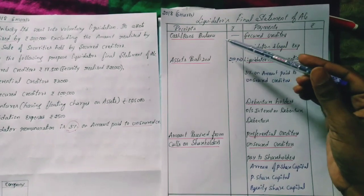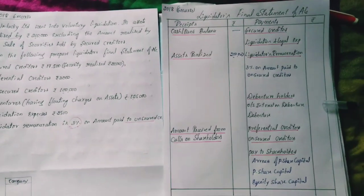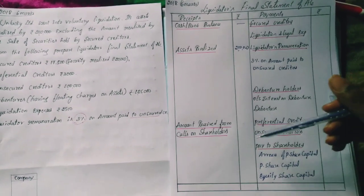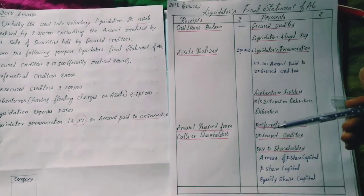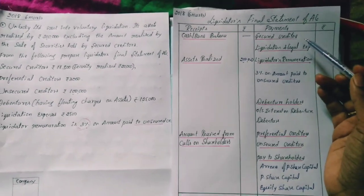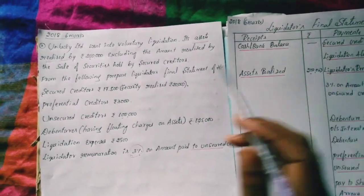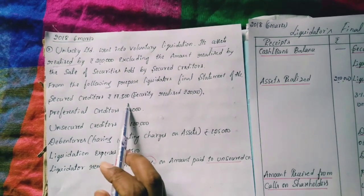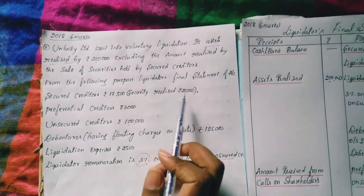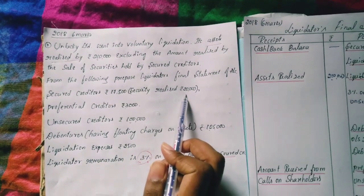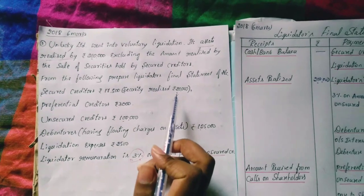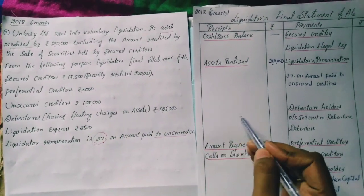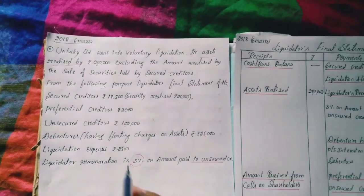Asset realized is given in this question. There is also an amount received from calls on shares. The question has a secured creditor. The secured creditor value is Rs.17,500 and the asset realized against it is Rs.20,000. We have already explained the format — surplus from secured creditors.